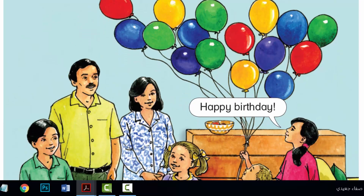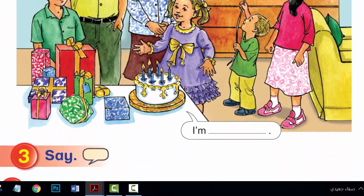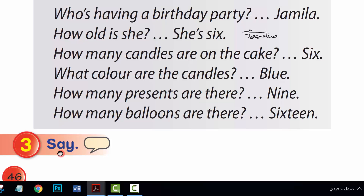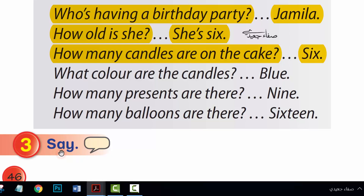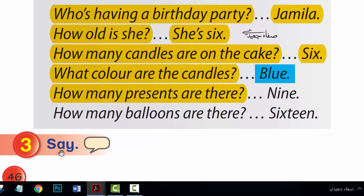How many balloons are there? Nine. Who's having a birthday party? Jamila. How old is she? She's six. How many candles are on the cake? Six. What colour are the candles? Blue. How many presents are there? Nine. How many balloons are there? Six.